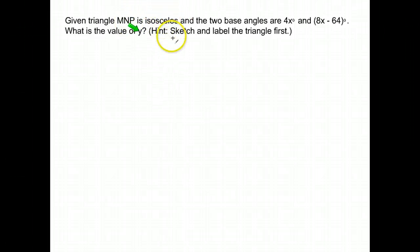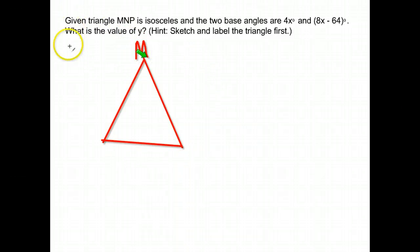If you want to pause and do it yourself to see if you got it right, that would be a good option. Again, we're given an isosceles triangle with vertices M, N, and P. It doesn't tell us specifically which angles are which, so I'm just going to label it. The base angles are measured 4x and 8x minus 64.